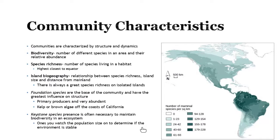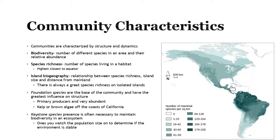Biodiversity talks about community characteristics — the different number of species in an area and their abundance. It all comes down to the habitat and what it can support. One of the most diverse areas is the rainforest, close to the equator, which has so many resources and contains species we haven't even identified yet. An increase in biodiversity means an increase in species richness — the number of species living in an area. This biodiversity map shows darker green indicating higher species richness.